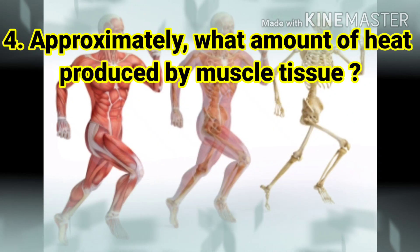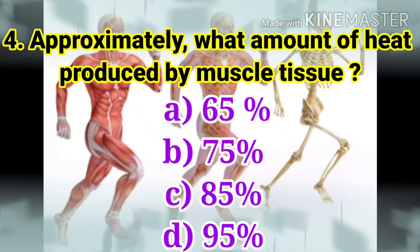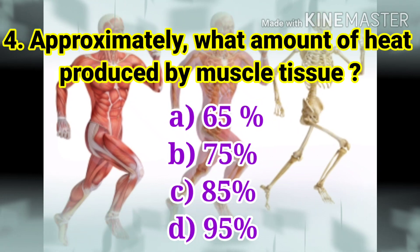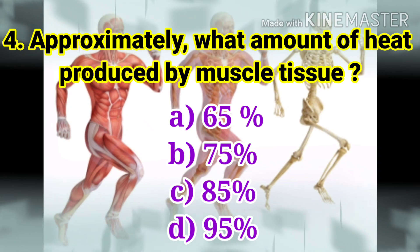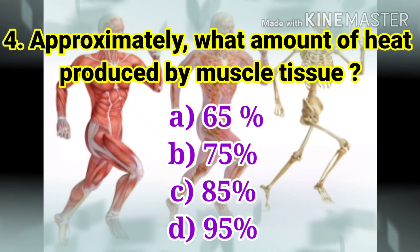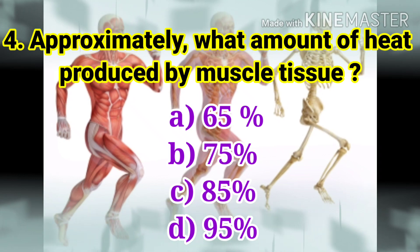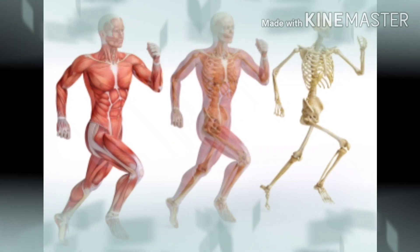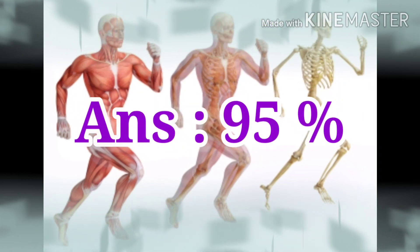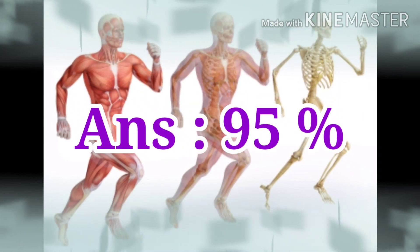The next question: approximately what amount of heat is produced by muscle tissue? The options are 65%, 75%, 85%, and 95%. The answer is 95%.